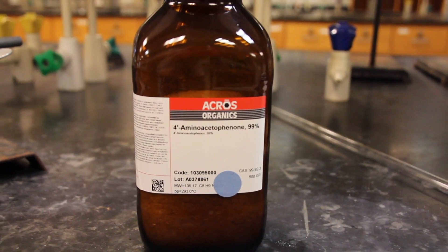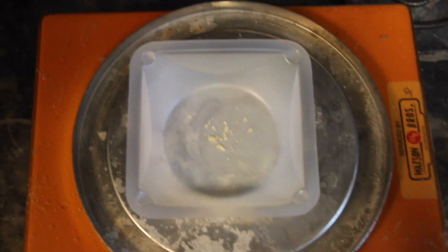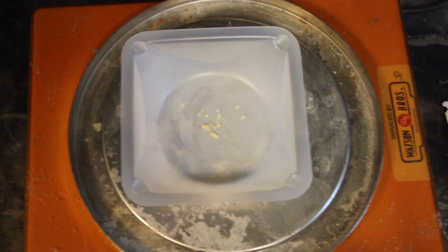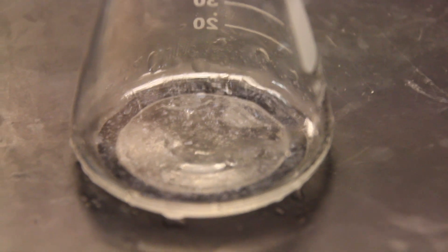You will now recrystallize 4-aminoacetophenone in a suitable solvent. A good recrystallization solvent should be able to dissolve a high quantity of a target substance near the solvent's boiling point, but only a small quantity near 0 degrees Celsius.